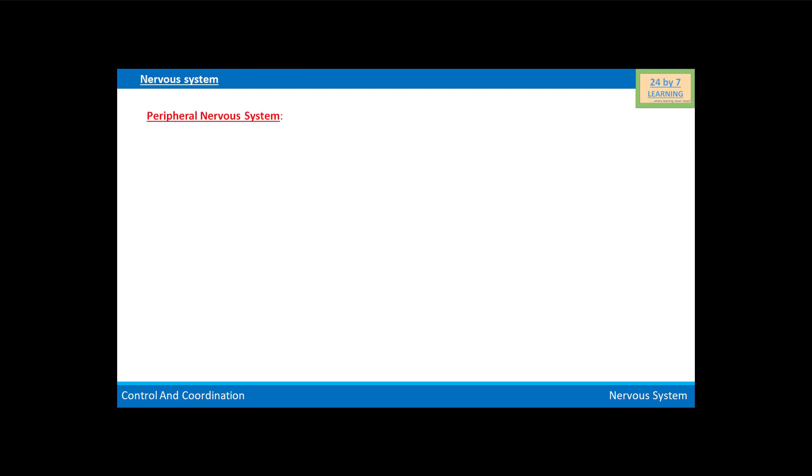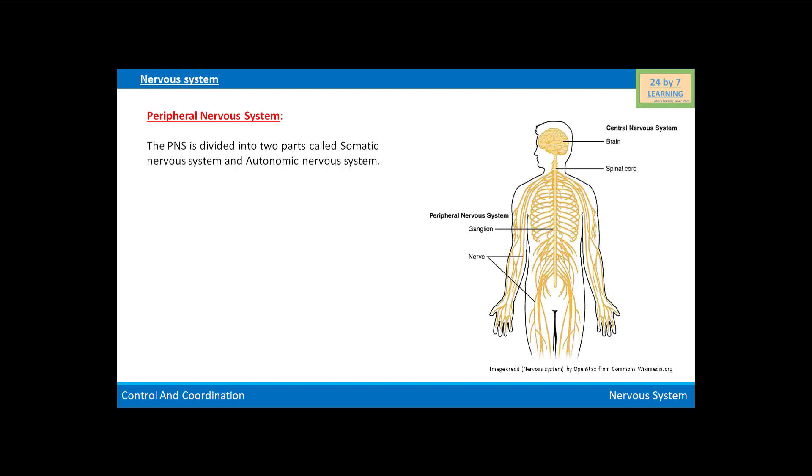Now we will discuss the peripheral nervous system. The PNS is divided into two parts called the somatic nervous system and the autonomic nervous system.